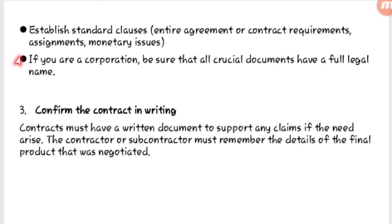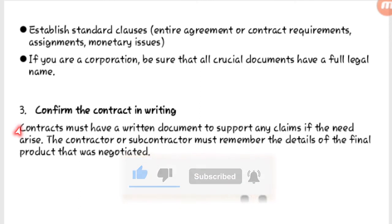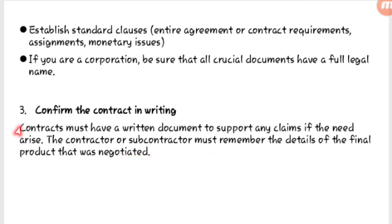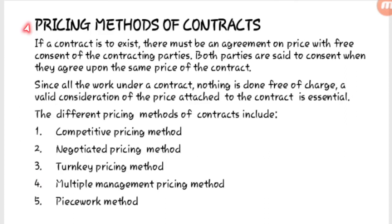The third thing under contract drafting is to confirm the contract in writing. Remember, in drafting we are writing a sketch of what you want, including your final document. So the third step is to write the final document — after spelling out everything you need and both parties have agreed, you write the final copy of the contract.